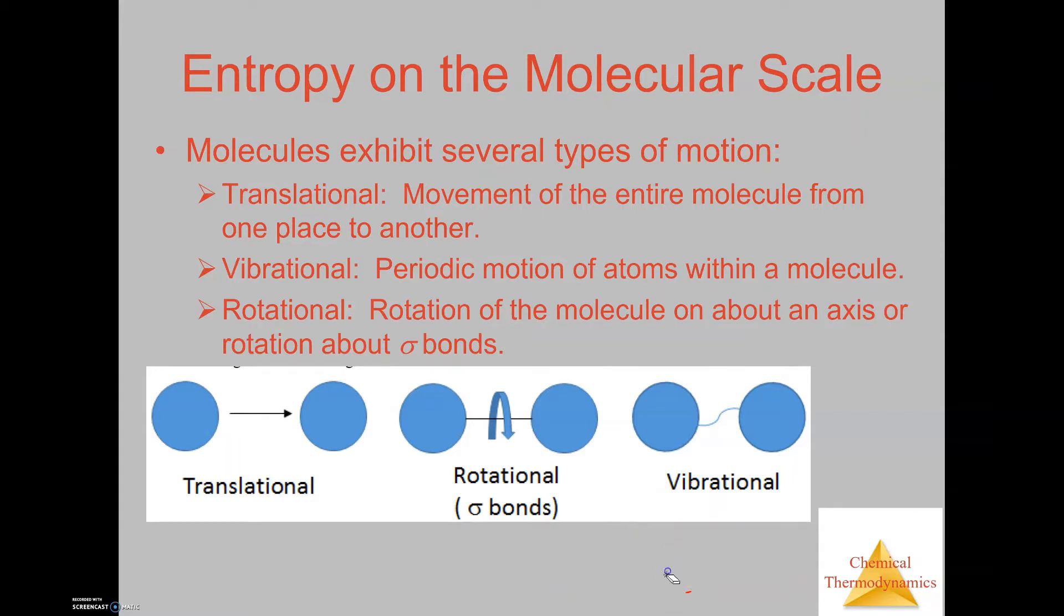So rotation is the ability of the atoms to rotate around sigma bonds. Vibration is the vibrational frequency you get in between the bonds of the two atoms. And then translational is the movement across space.